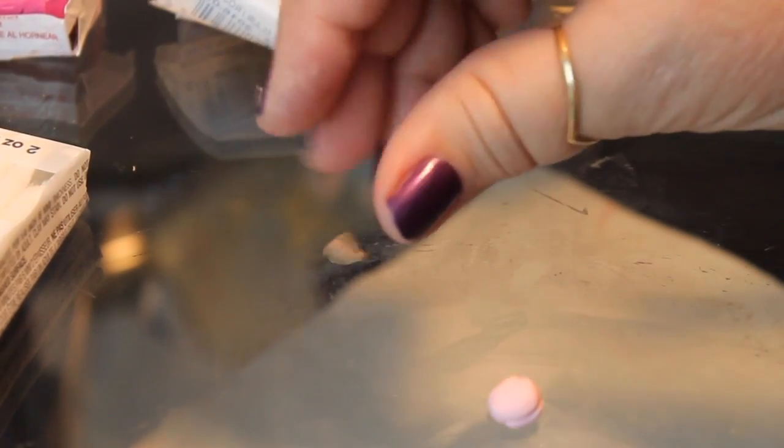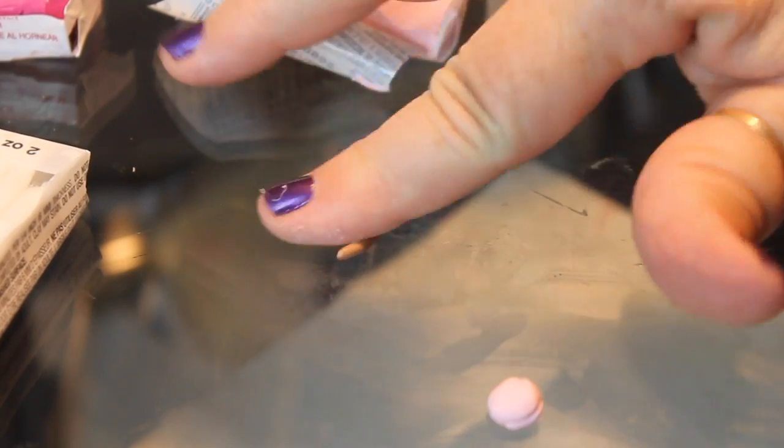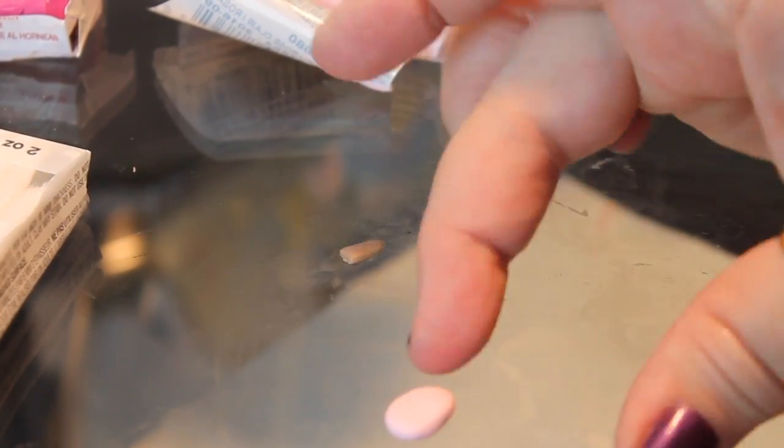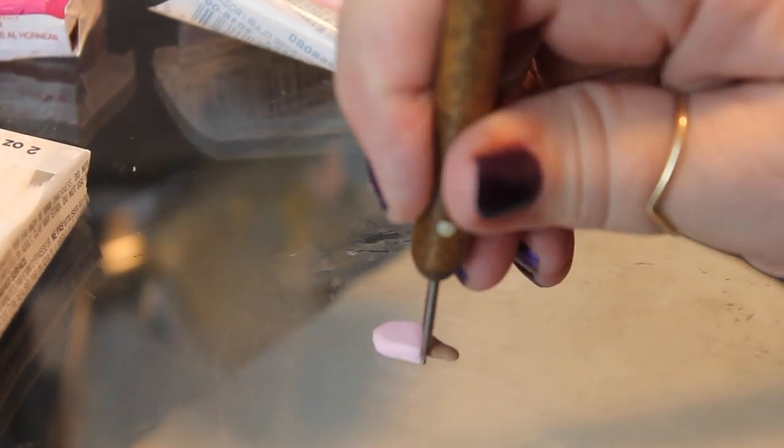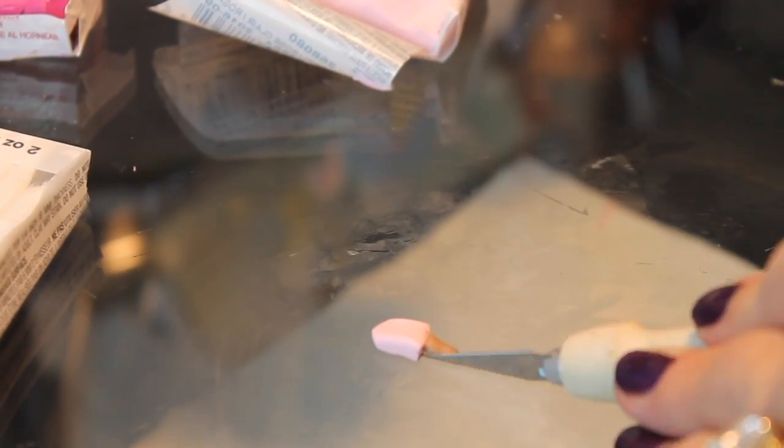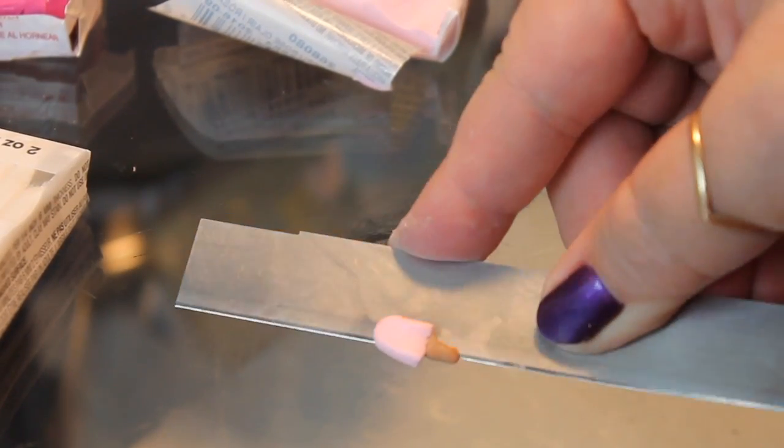And that goes over on the aluminum foil. And now we're going to move on to another project. This time we're going to make a popsicle. This is another thing you'll see fairly frequently. I'm using some tan clay for the handle, and then some pink clay that I'm shaping into the popsicle shape, and then attaching the little handle to it.